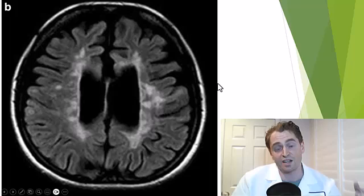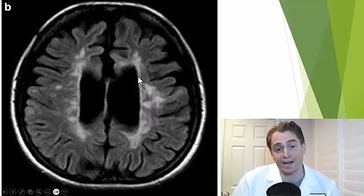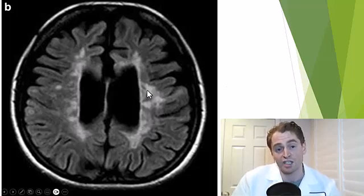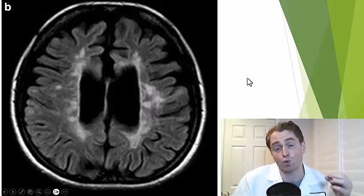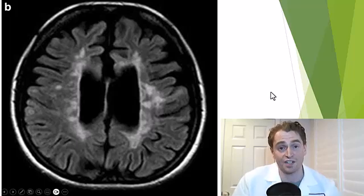Here is another example. Again, the lateral ventricles are touching these periventricular lesions, and the sulci — the gaps between the gyri — are much larger than normal, indicating brain atrophy.